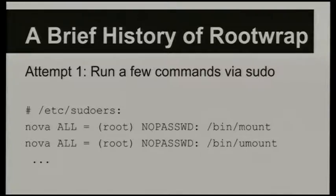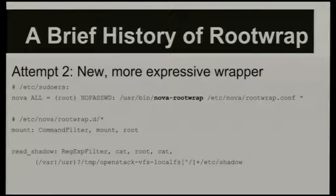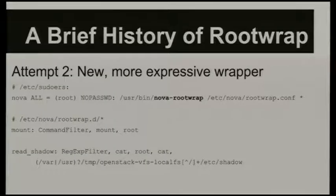The second attempt was to add RootWrap. We added a new intermediate command called RootWrap. You would run sudo and then RootWrap, and then the command you actually wanted to run. So you now had only one entry in the sudoers file — let me run RootWrap. RootWrap itself had a more expressive configuration file more under the control of the OpenStack developers, and they could use that to describe the other commands you're allowed to run, hopefully better suited to the sorts of security checks that OpenStack wanted.